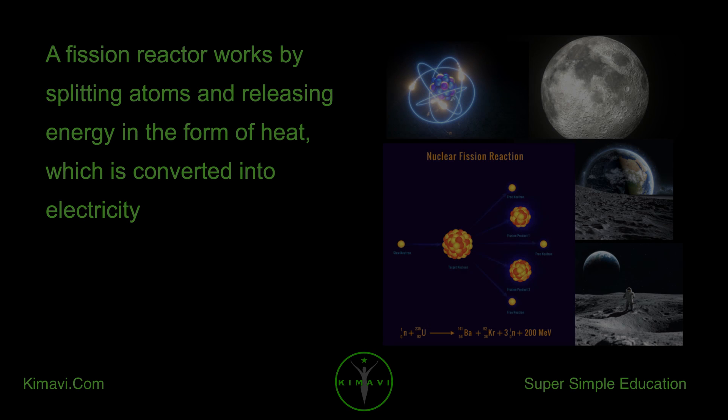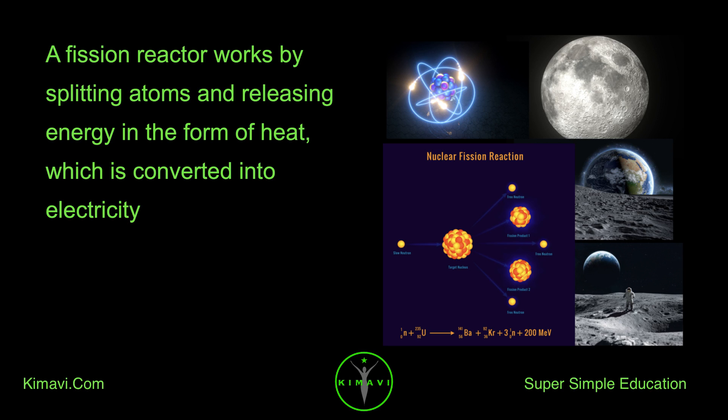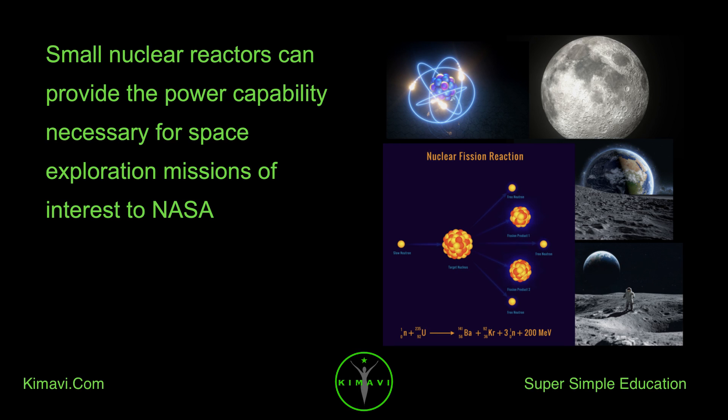A fission reactor works by splitting atoms and releasing energy in the form of heat, which is converted into electricity. Small nuclear reactors can provide the power capability necessary for space exploration missions of interest to NASA.